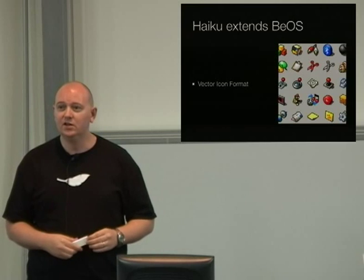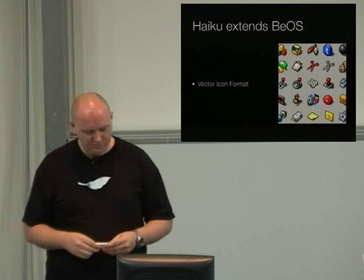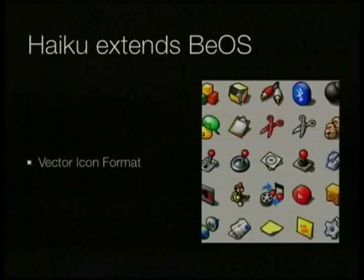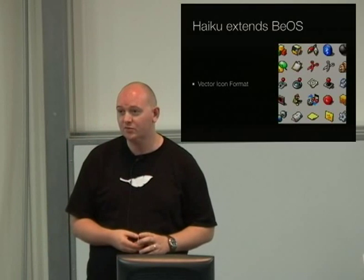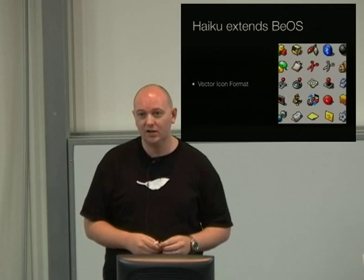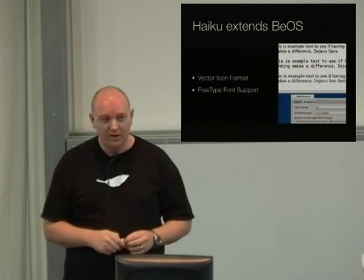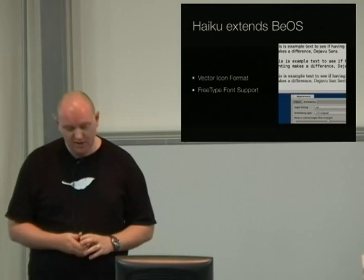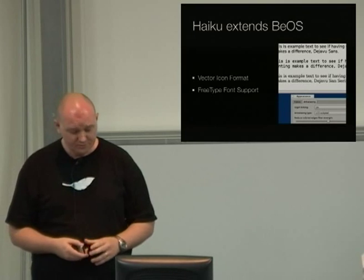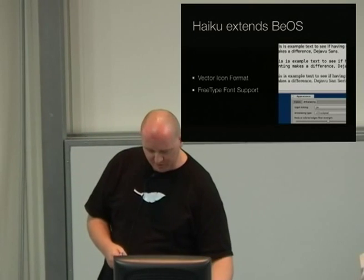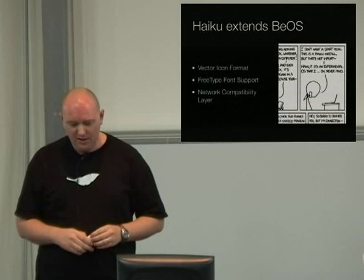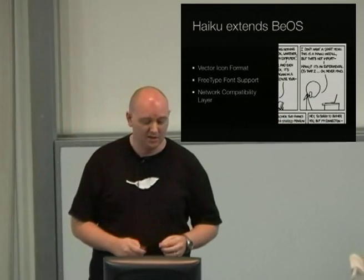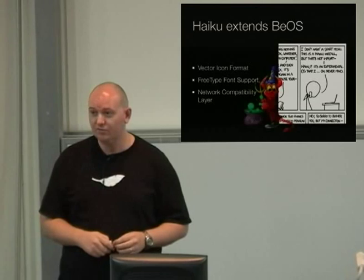Some of the underlying technologies that Haiku has recently been praised for include its vector icon format, which was invented by one of the Haiku core developers. This format enables very small files and fast rendering. They're also using the FreeType font support, which is a high-quality and portable font engine, and this is something that BOS didn't have. They're also using a network compatibility layer thanks to the FreeBSD project.